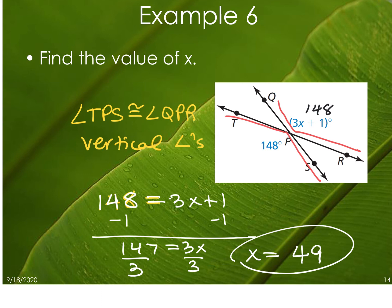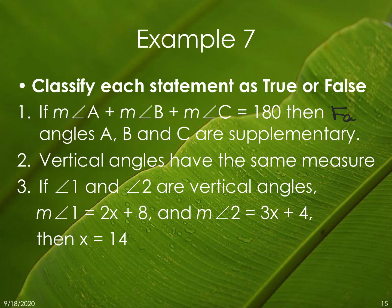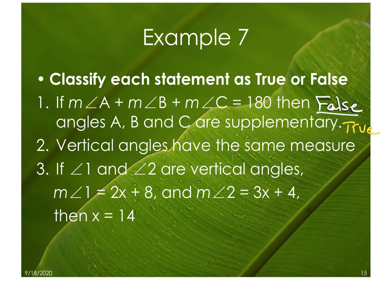Classify each statement as true or false. Number one: if the measure of angle A plus the measure of angle B plus the measure of angle C equals 180, then angles A, B, and C are supplementary. This is a trick question — supplementary angles require exactly two angles, so you cannot have three angles be supplementary. This is false. Number two: vertical angles have the same measure. True — we just learned the vertical angles theorem, the VAT.